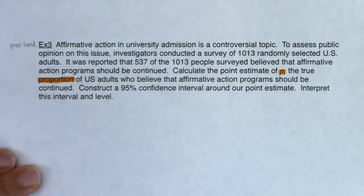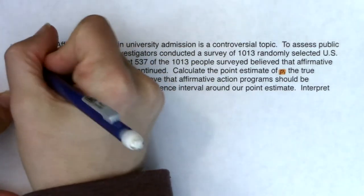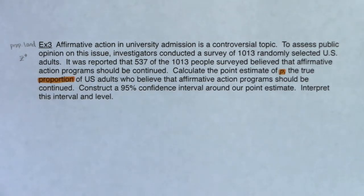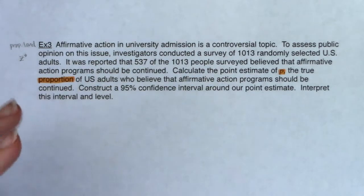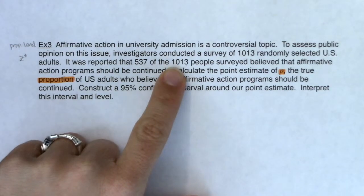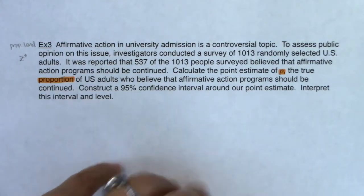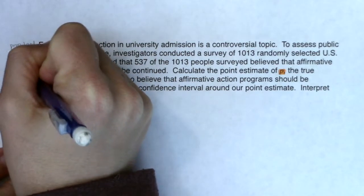First, determine which land we're in. I see the word 'proportion' and the letter p in the problem, so we're in proportion land. In proportion land we always use a z* critical value — when we're in mean land that will change to a t* critical value. For chapters 8 and 9, we always look at one sample; here my sample size was 1,013 but I only ran this survey once.